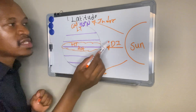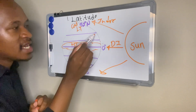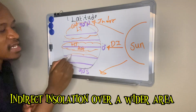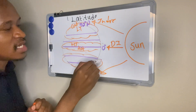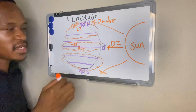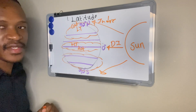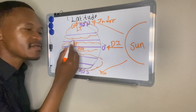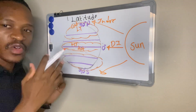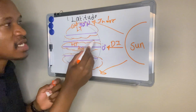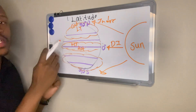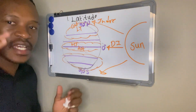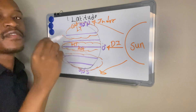If you move towards our poles, this indirect insolation is covering a wider or bigger surface area compared to the equator. So the equator is receiving direct insolation over a small surface area, hence it is hot. Our poles are receiving indirect insolation over a wider surface area, hence they are cold and have low temperatures.